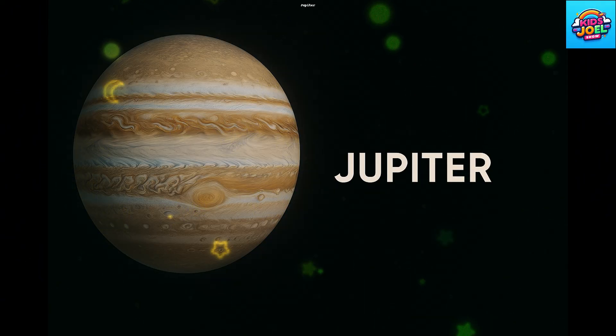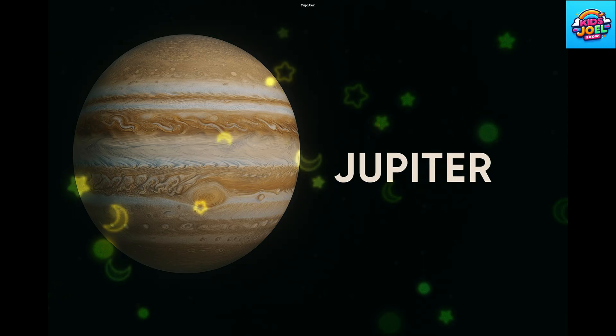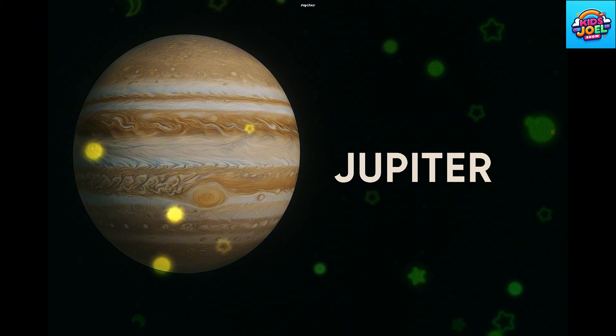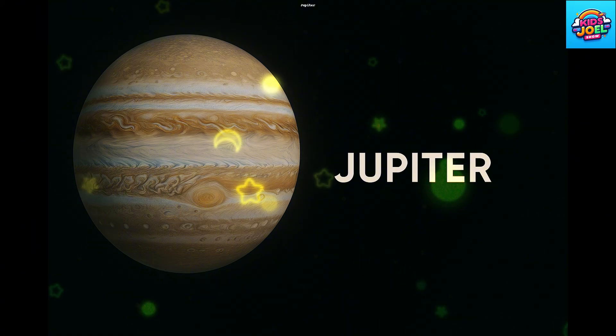Blue Jupiter is the biggest one, a giant ball of gas and fun. With a great red spot that swirls around, so many moons that can be found.